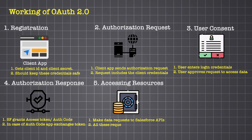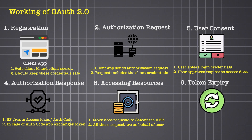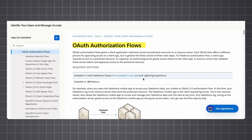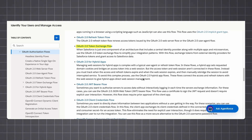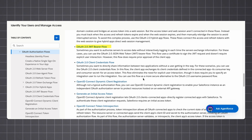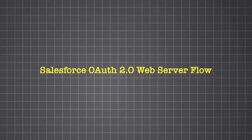The client app then uses the access token to make authenticated requests to the resource server — in this case, Salesforce APIs — acting on behalf of the user. Access tokens are usually short-lived for security, and when they expire the app can use the refresh token to get a new one without bothering the user again. Salesforce offers various OAuth flows tailored for different use cases.